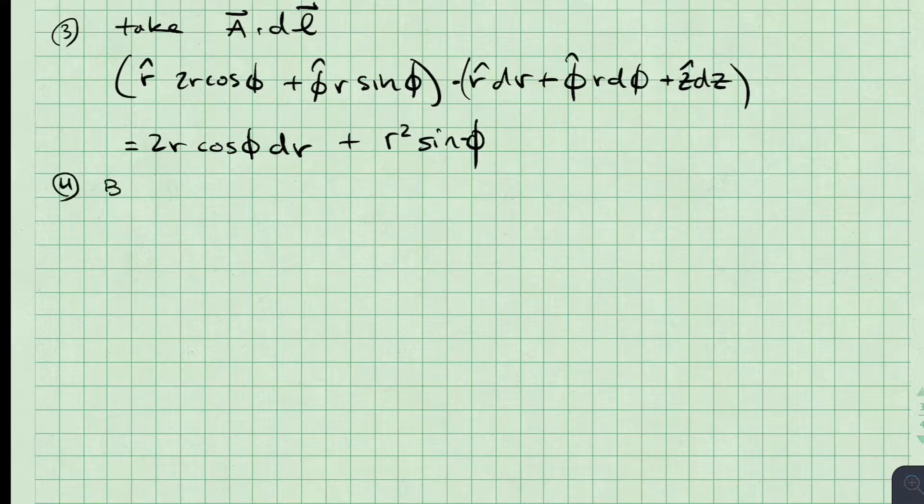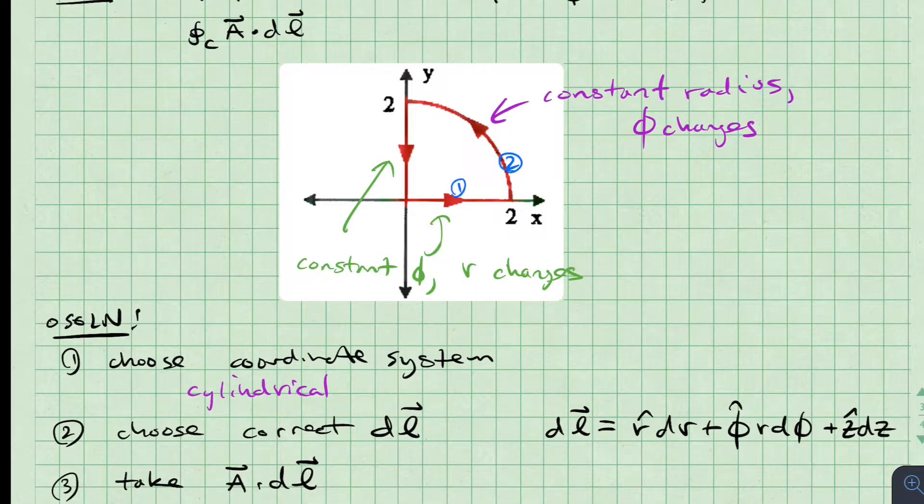Now, let's break that closed contour into pieces where the integration is easier. Let's call the part from x equals 0 to 2, section 1, the curved part, section 2, and the part from y equals 2 to 0, section 3, where we are very careful to follow the arrows around the contour.